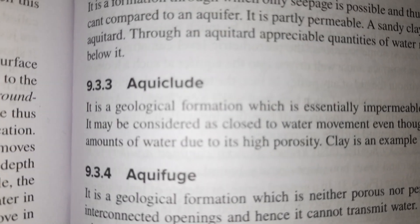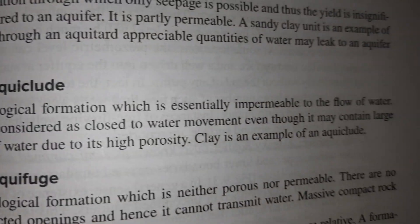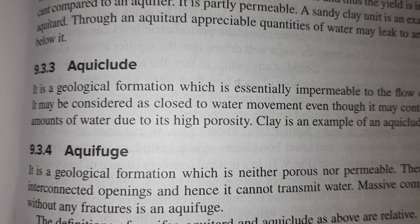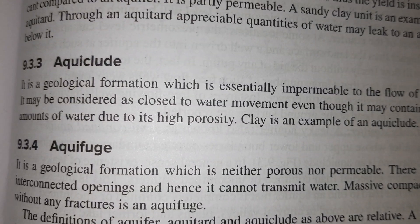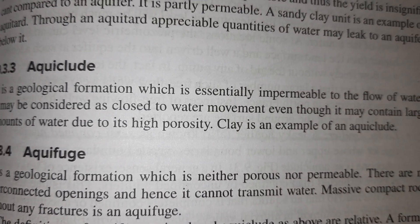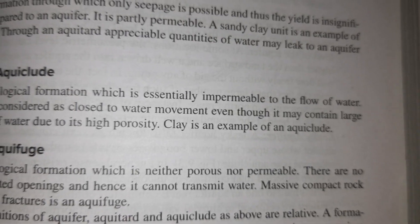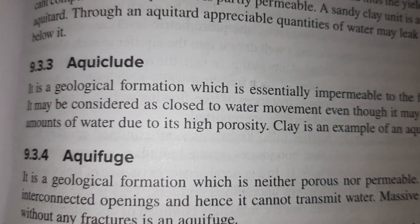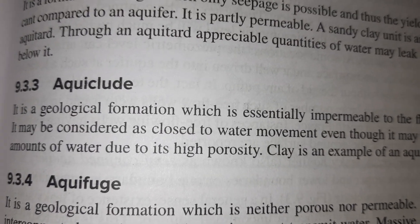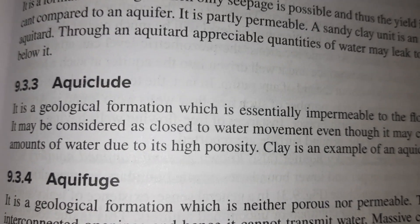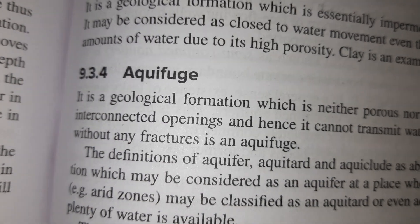Then we have the aquiclude. It is a geological formation which is essentially impermeable to the flow of water. It may be considered as closed to water movement, even though it may contain a large amount of water due to its high porosity. Clay is an example of an aquiclude. It can store large amounts of water but you cannot extract water from it because it is impermeable to the flow of water.